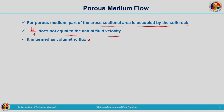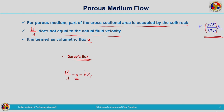In a porous media, we represent Q divided by A — capital Q divided by A — as volumetric flux, represented by small q. This is also termed as Darcy's flux. We can write V equal to gamma d squared divided by 32 mu Sf, and Q by A is represented by small q. These terms can be considered together and denoted by K, and Q by A can be equated to the volumetric flux small q equal to K Sf.